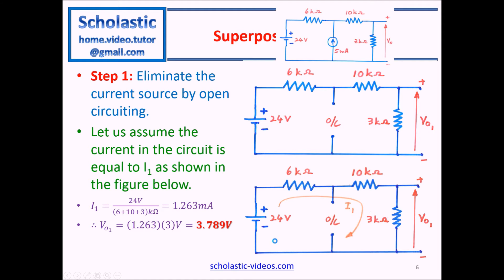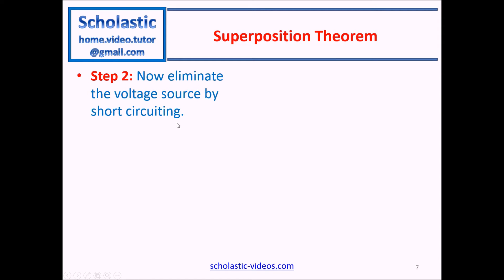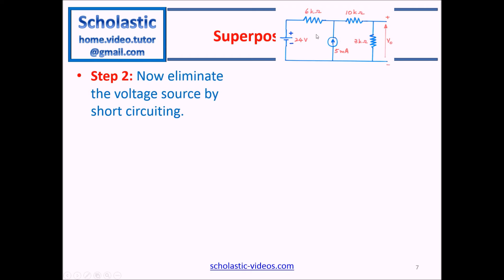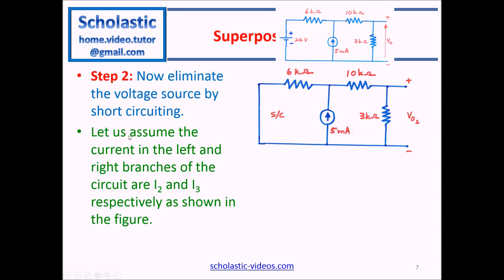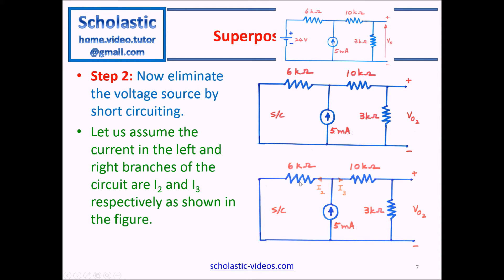Step two: eliminate the voltage source by short-circuiting it. The current source remains in the circuit. We now have output V02 due to this configuration. We assume current I2 flows in the left branch and I3 flows in the right branch. I3 times 3 kΩ will give us the voltage drop V02 due to the current source.